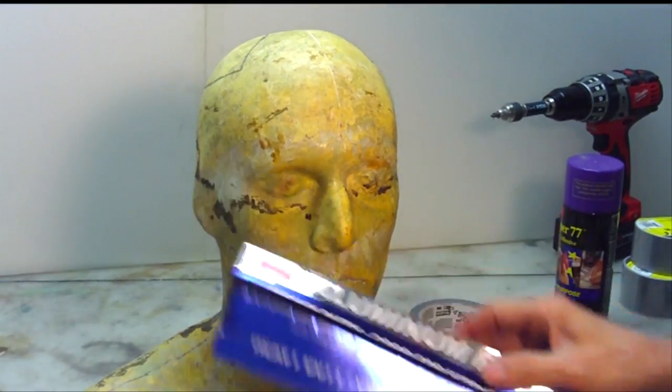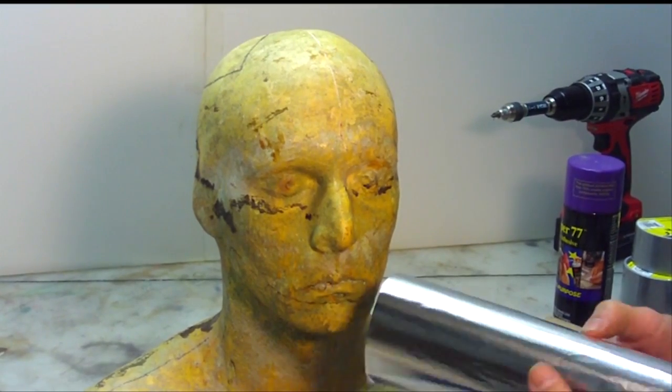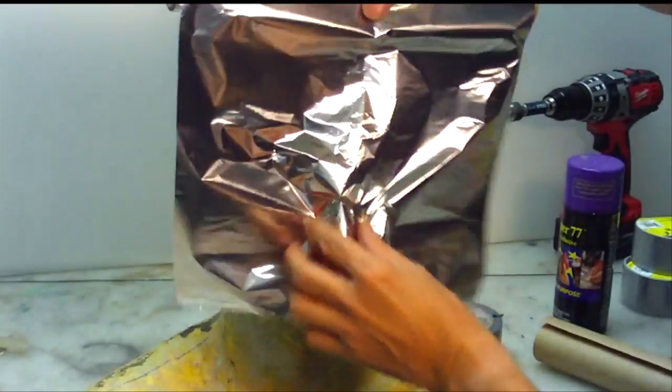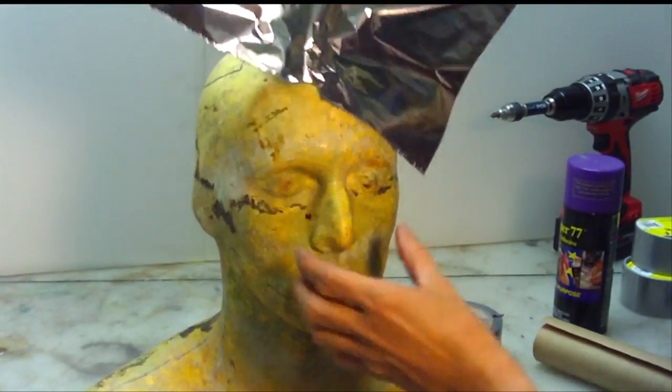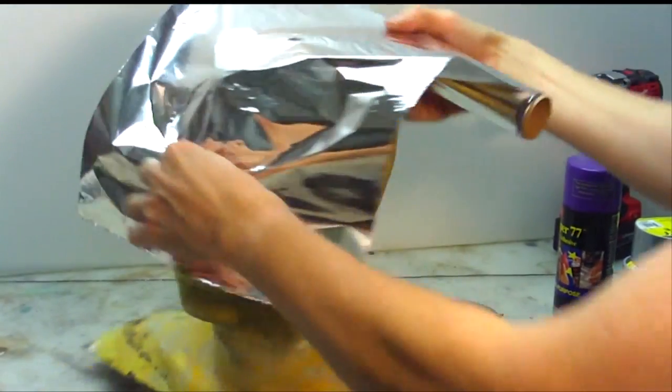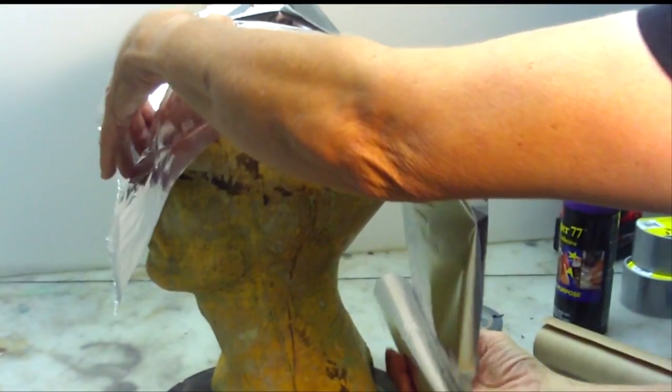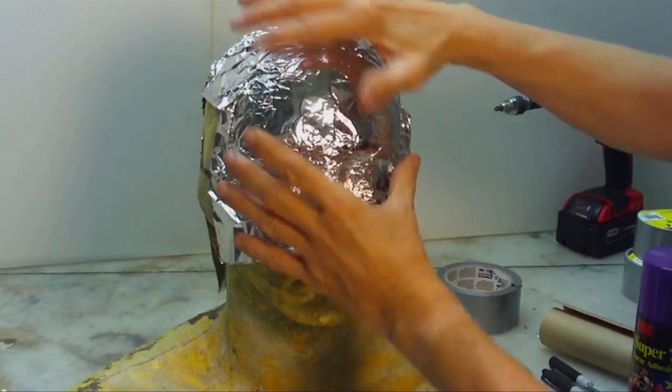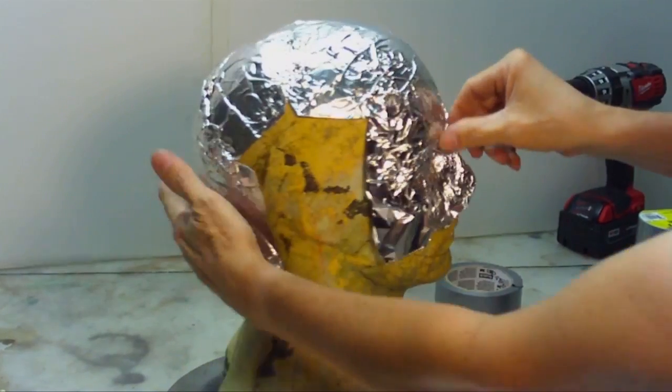Now we're going to take our aluminum foil on our head cast. This is what we're going to use to make our pattern. So what I like to do, because we have the face open a little bit, I'm going to wrap this here, come back here, go down the head. Now we have the foil on here. I've wrapped it on the front and the back, with a little bit of space here on the side.